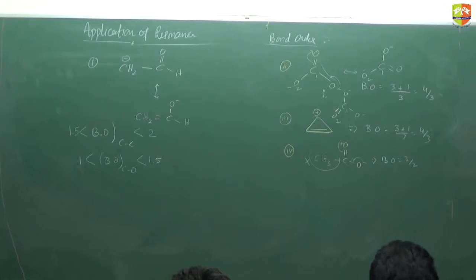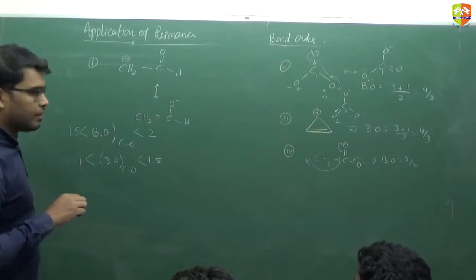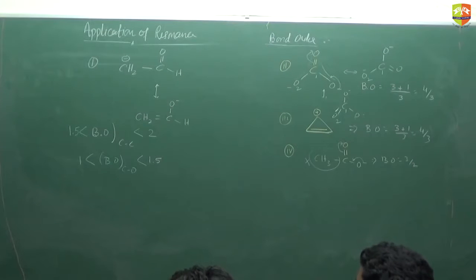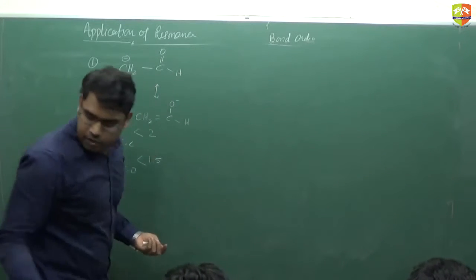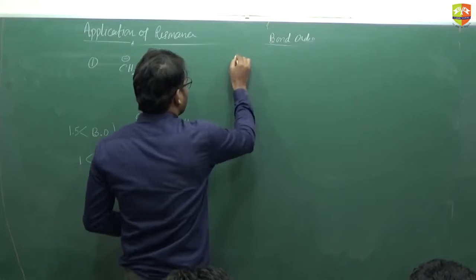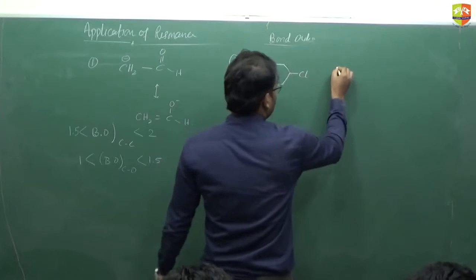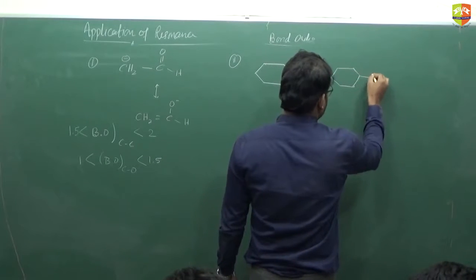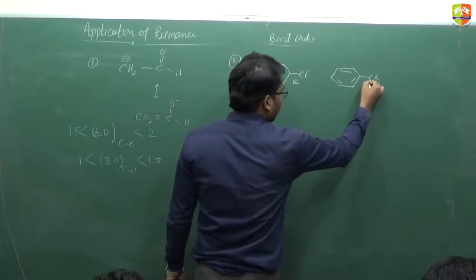You should know the rules for which resonating structure is more stable, and accordingly you can write down the range of bond order. If the contribution is like 60-40 or 70-30, that is difficult to judge exactly — that's why we write down the range instead of an exact value. Next example: chlorobenzene. What is chlorobenzene? Suppose this is bond A and bond B — the carbon-chlorine bond. Tell me the bond order comparison of bond A and bond B.